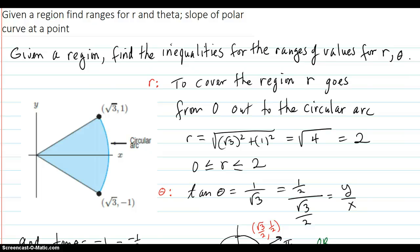Given a region, we're going to find the ranges for r and the angle, and then we're going to do the slope of a polar curve at a point. But first, given the region, here's the region over here, find the inequalities for the ranges of r and theta.